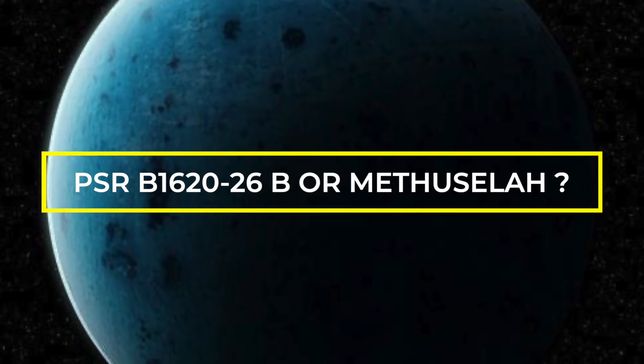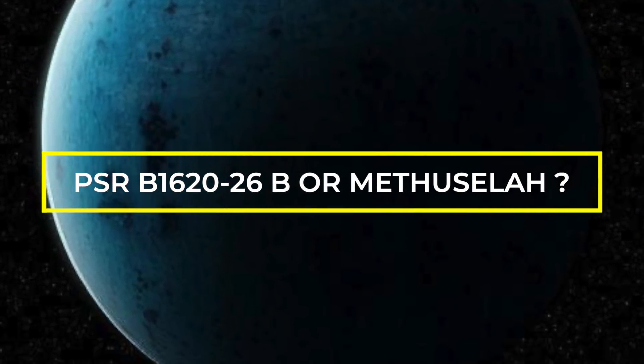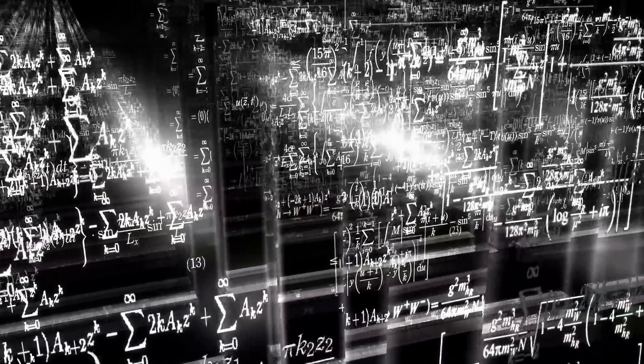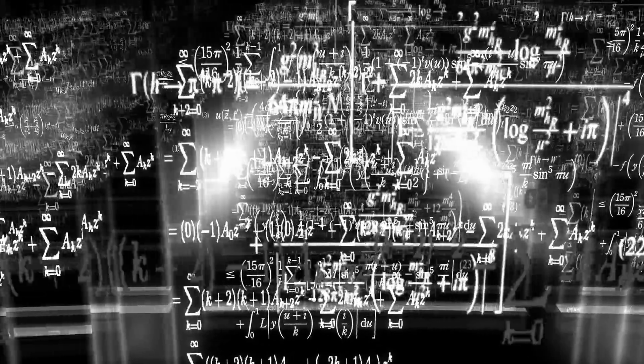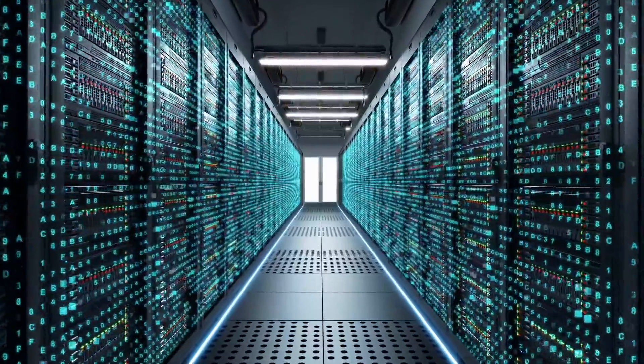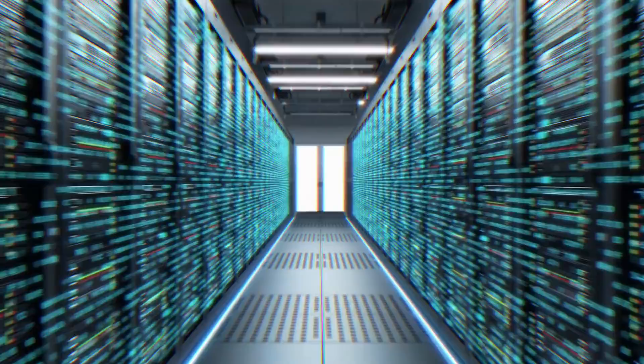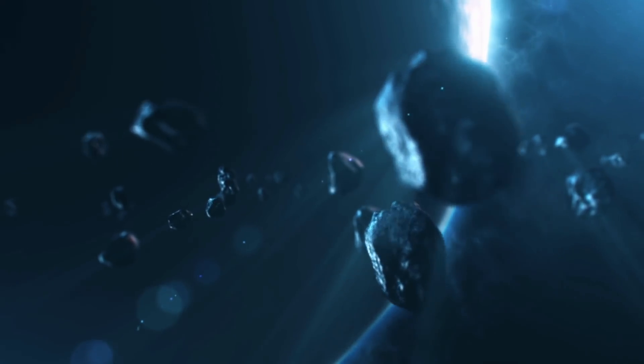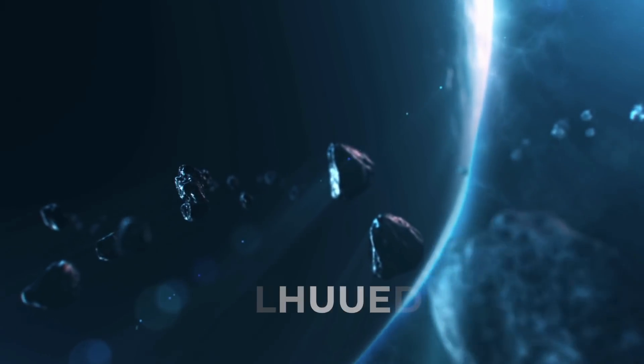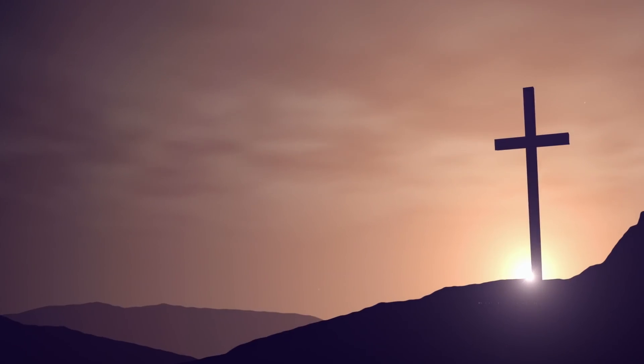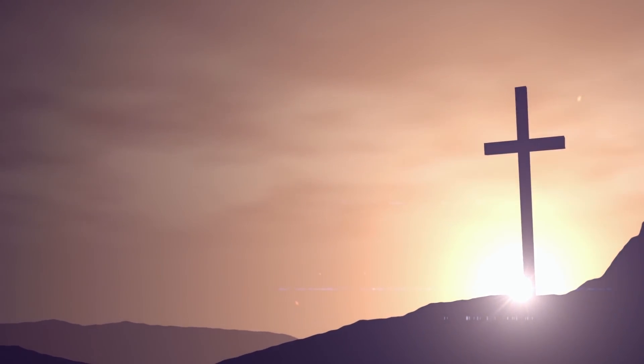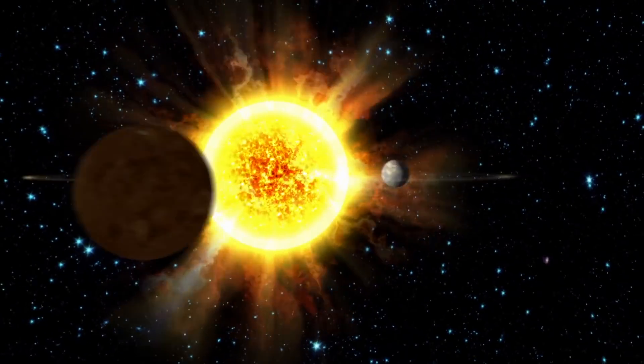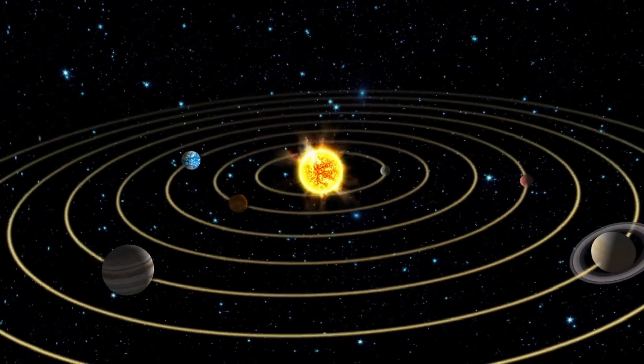The designation PSR B1620-26b for the planet is not used in any scientific work. However, in the SIMBAD database, the planet is listed as PSR B1620-26b. Even if it is not officially recognized, the name Methuselah is often used for the planet. The name goes back to the biblical person Methuselah, who was the oldest person who ever lived in Christianity. This name is therefore used to make parallels with the planets of the solar system. Methuselah is also the only planet that bears a name from the Bible.